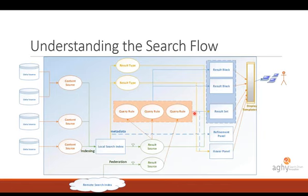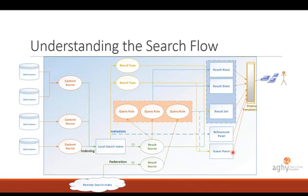The next important concept is result types. A result type defines what kinds of results you have — PDF files, people, Word documents, videos, pictures, etc. — and based on the result type, the display will be different. A video is displayed differently from a PDF file, both in the result set and the hover panel. What we display to users — the result set, result blocks, refinement panel, and hover panel — is all built using result types, query rules, metadata, and all the concepts introduced so far.